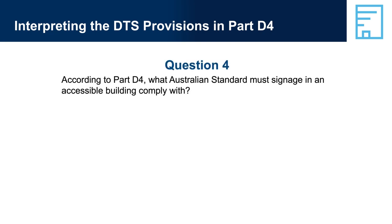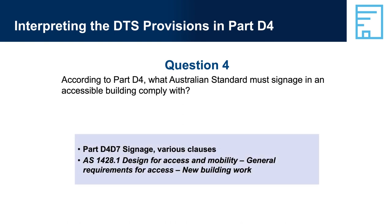Question 4: According to Part D4, what Australian standard must signage in an accessible building comply with? Answer: Part D4-D7 Signage — AS 1428.1, Design for Access and Mobility, General Requirements for Access, New Building Work.